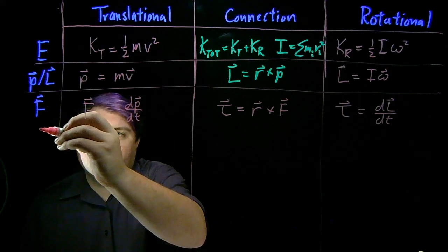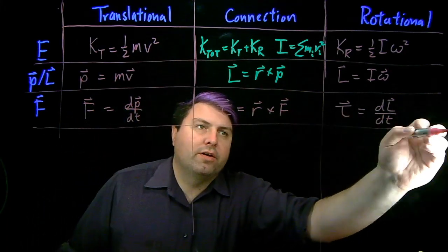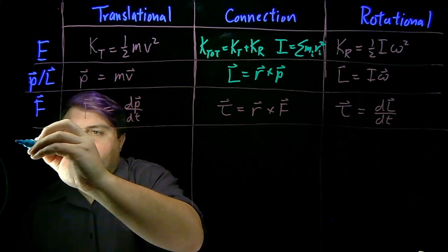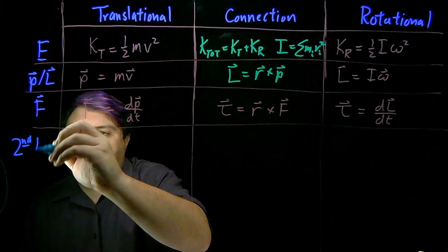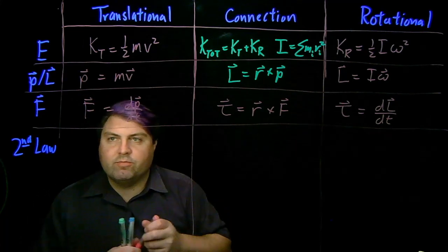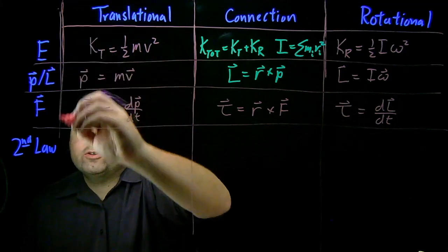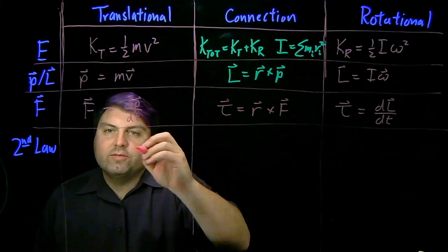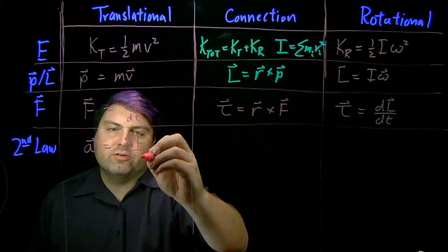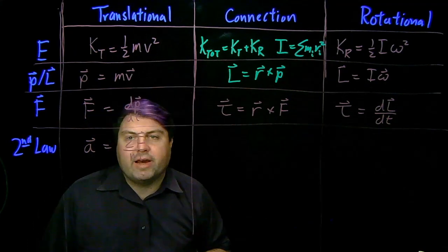So once we have our forces, then if we think about second law concepts, how to relate our forces to changes in motion, for translational motion, our Newton's second law is that our acceleration is equal to the sum of the forces over the mass.